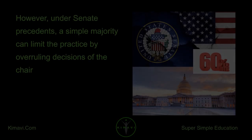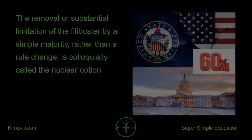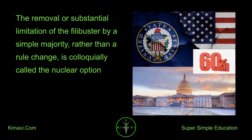However, under Senate precedents, a simple majority can limit the practice by overruling decisions of the chair. The removal or substantial limitation of the filibuster by a simple majority, rather than a rule change, is colloquially called the nuclear option.